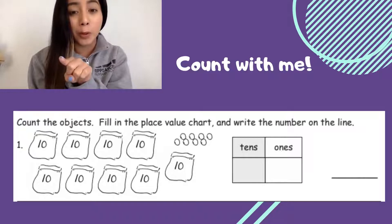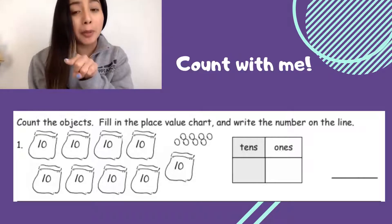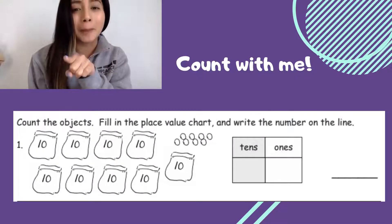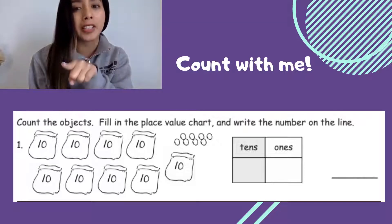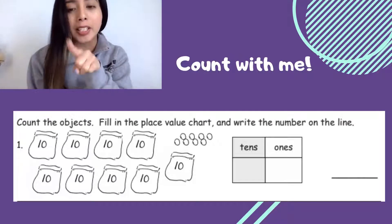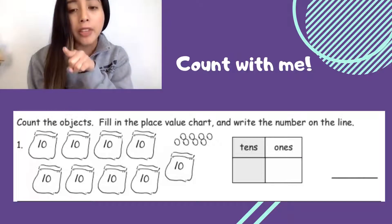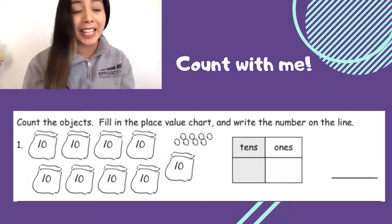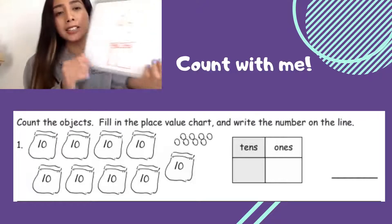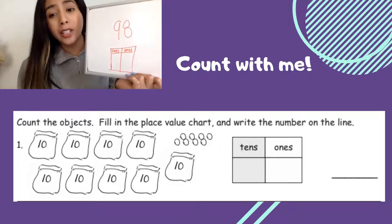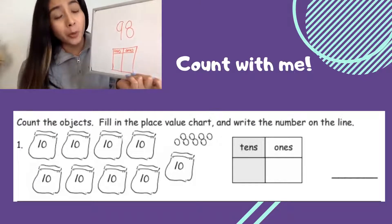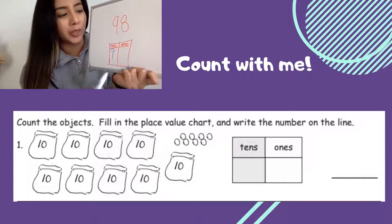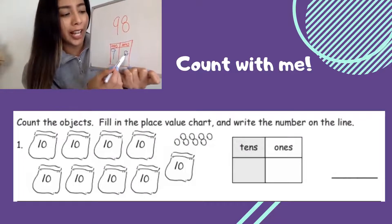And now we have only those little extra ones there. Remember, because we no longer have another group of 10, just loose ones, we can start counting by ones. We left off at 90. Now let's count all these ones: 91, 92, 93, 94, 95, 96, 97, 98. We have 98 of those beads. There were 9 groups of 10 — all those bags that you see — and we counted 8 ones.